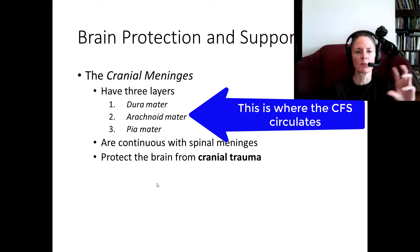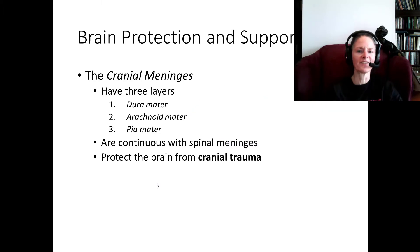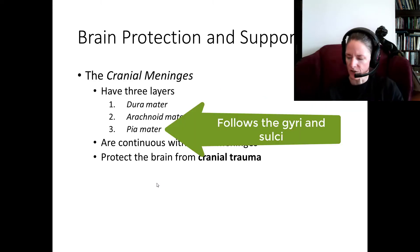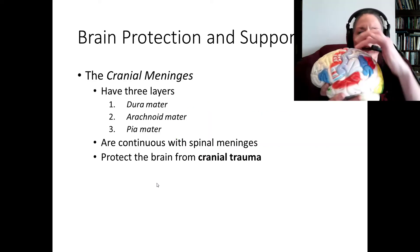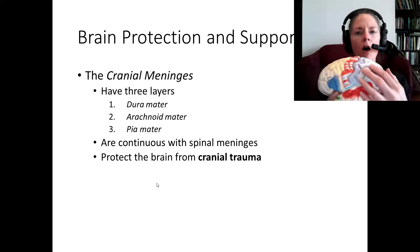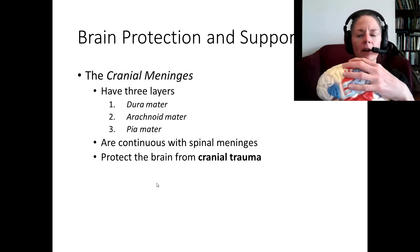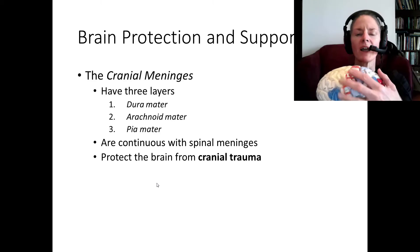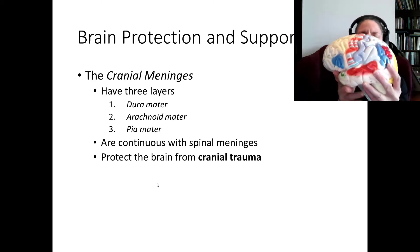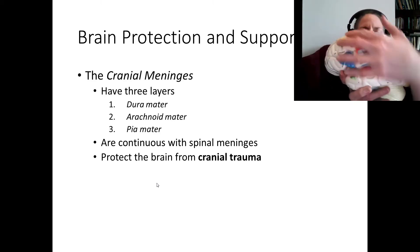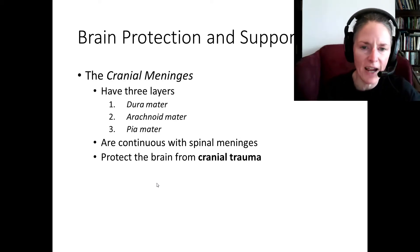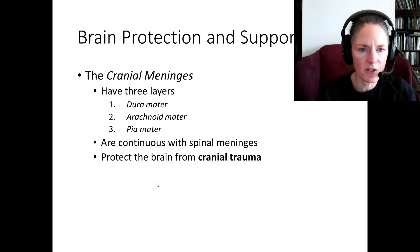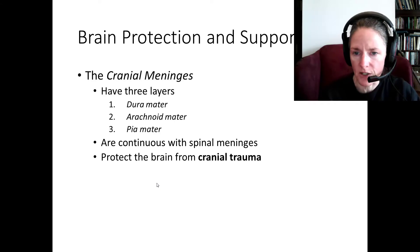The cerebrospinal fluid actually circulates through the arachnoid mater. Below that, we have a very fine layer called the pia mater, which is attached directly to the cortex of the brain. The pia mater follows all the indentations — all the gyri and sulci — basically following the curves of the outer cortex, and is held in place by astrocytes. The cranial meninges are continuous with the spinal meninges, and both receive cerebrospinal fluid from those ventricles.